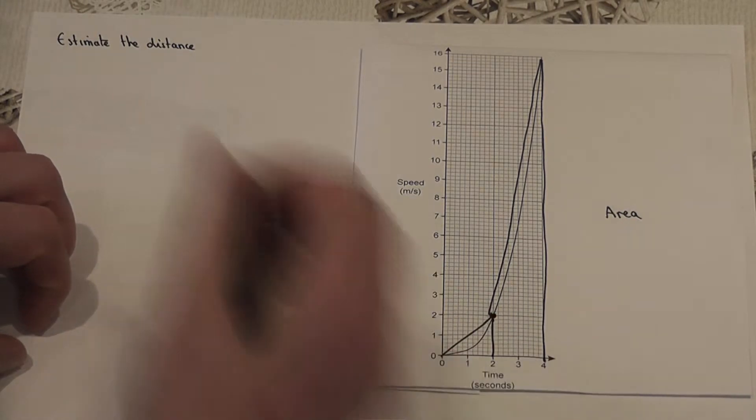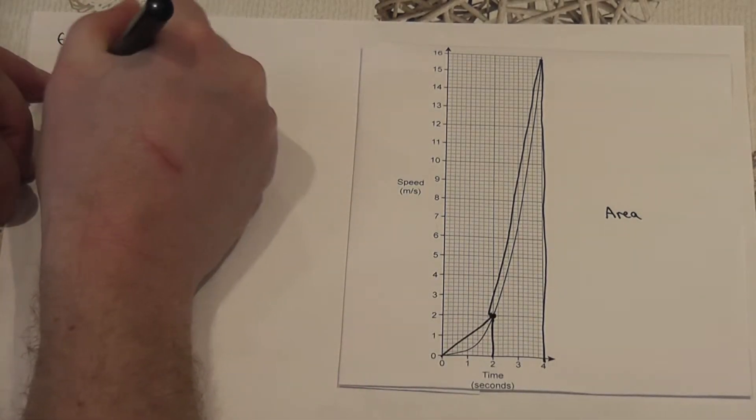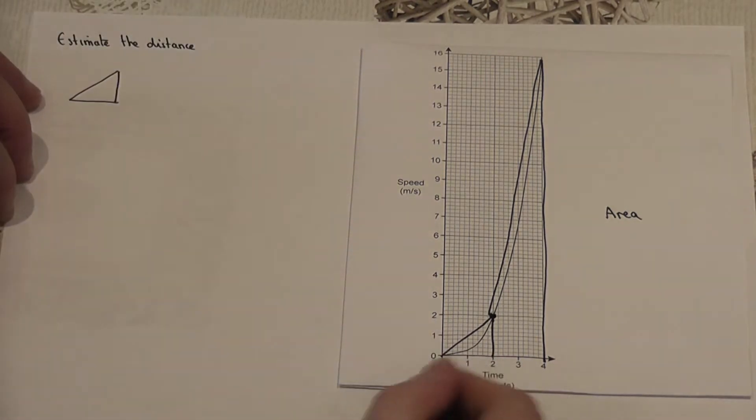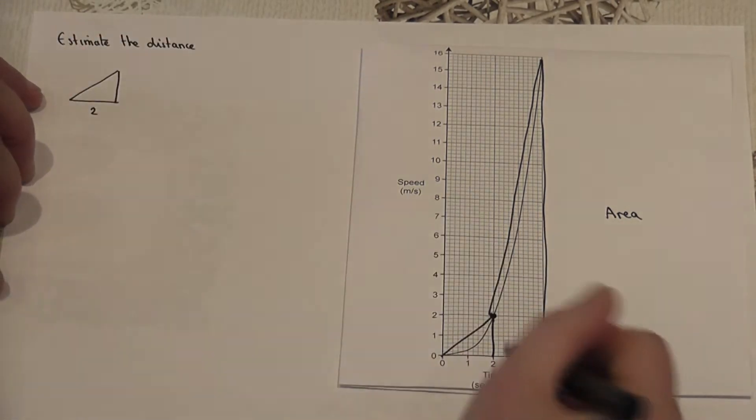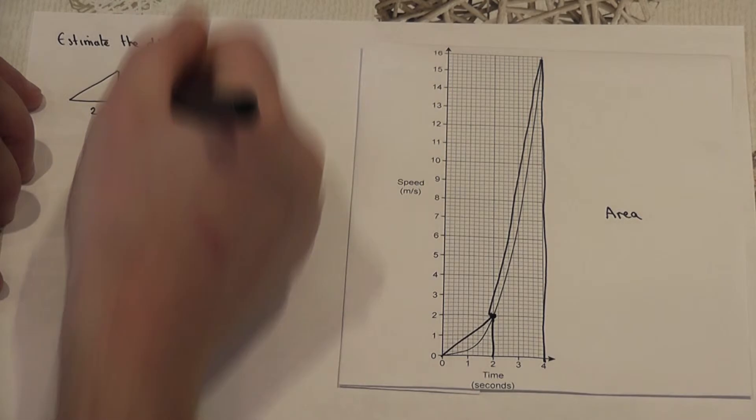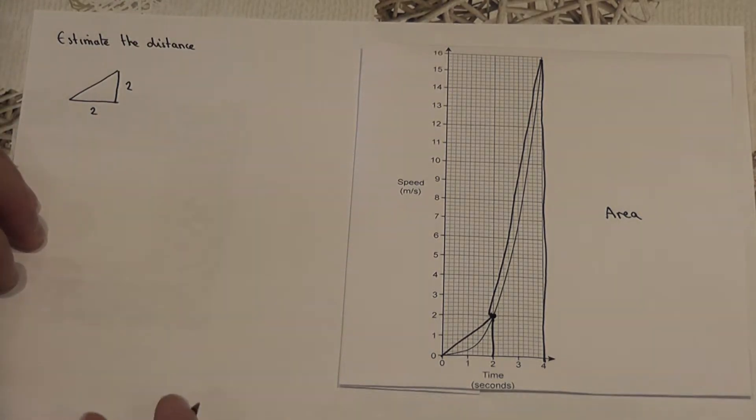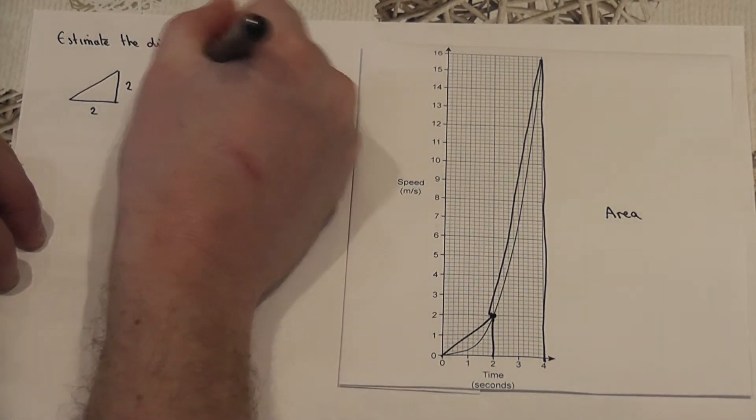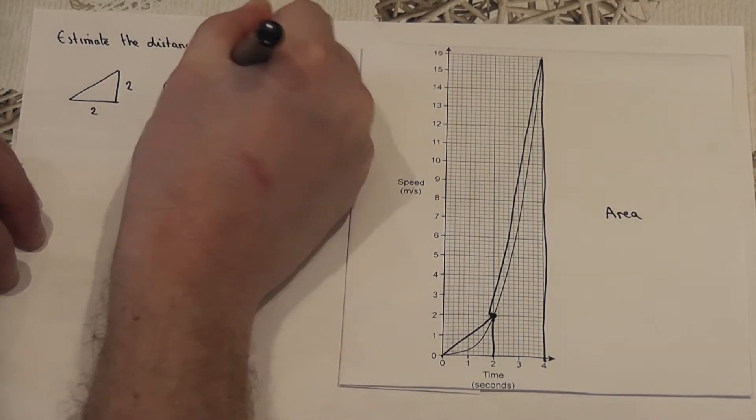So this first shape is a triangle. I'll draw it out for you to the side. It's got a base of 2 and a height of 2. So to find the area it'll just be a half of the base times the height.